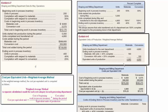The next step is calculating the equivalent units of production. We list two columns for materials and conversion. The units transferred to the next department were 4,800 — 100% complete, so we use all 4,800. For ending inventory, we had 400 units that were 40% complete: 400 × 40% = 160 equivalent units for materials. And 400 × 25% = 100 equivalent units for conversion. Adding down, we get 4,960 equivalent units for materials and 4,900 for conversion.